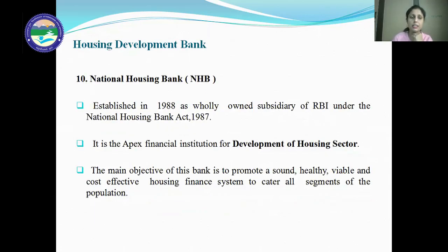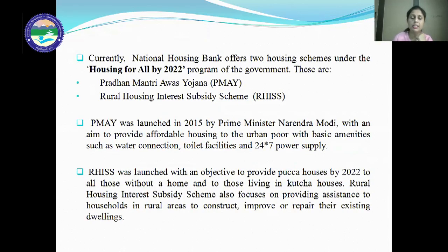Next is the Housing Development Bank, which includes the National Housing Bank. It was established in 1988 as a fully-owned subsidiary of RBI under the National Housing Bank Act 1987. The National Housing Bank is the apex financial institution for the development of the housing sector in India. Its main objective is to promote a sound, healthy, viable, and cost-effective housing finance system to serve all segments of the population. Currently, it has offered two housing schemes under the Housing for All by 2022 program: Pradhan Mantri Avas Yojana and the Rural Housing Interest Subsidy Scheme.